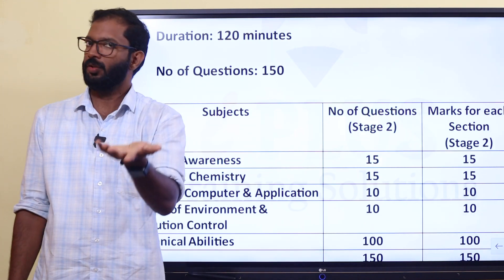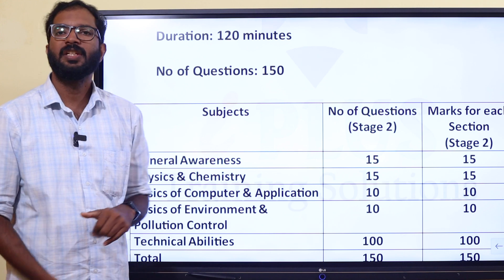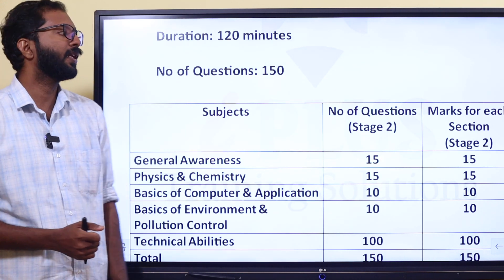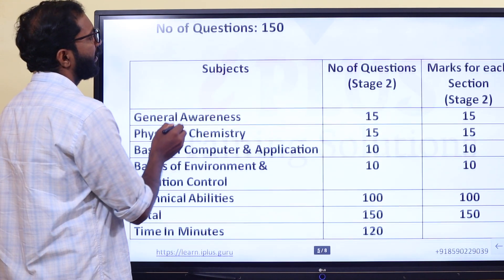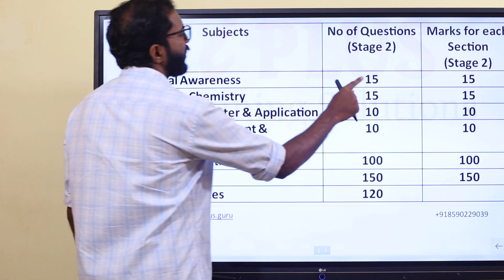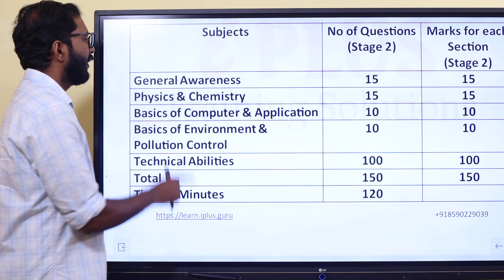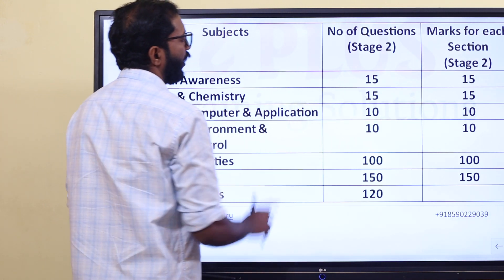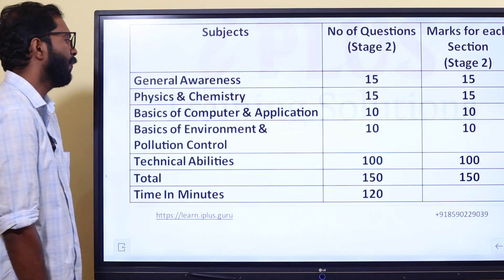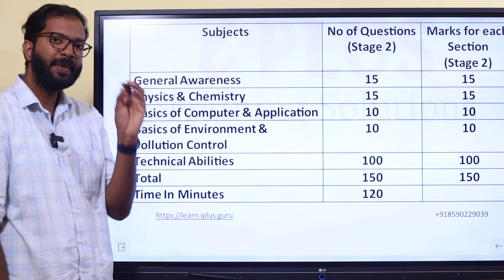We will select CBT-1 and CBT-2. The duration is 120 minutes. We will select 180 questions on the same subjects. Here we will select general awareness. For physics and chemistry: 15 marks. That will cover general awareness of physics and chemistry. We will select the basics of computer applications — 10 marks.